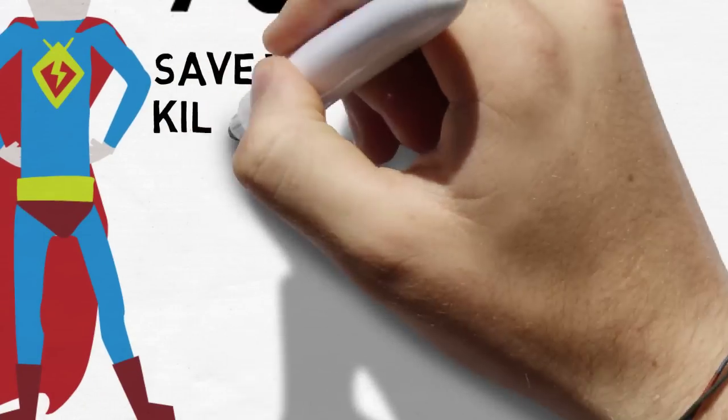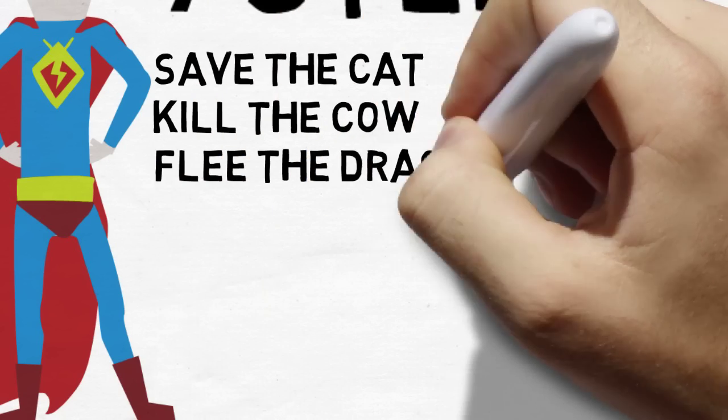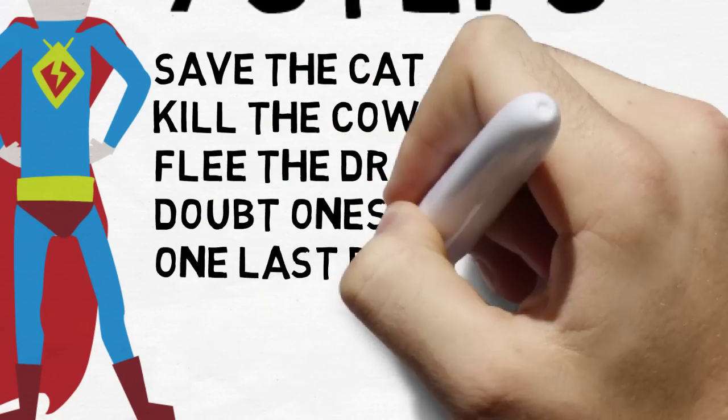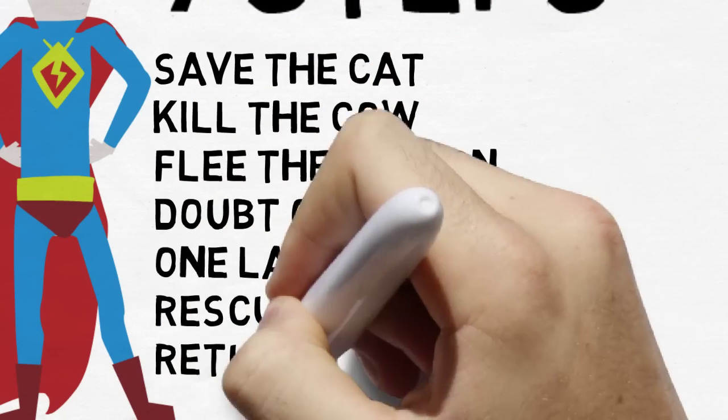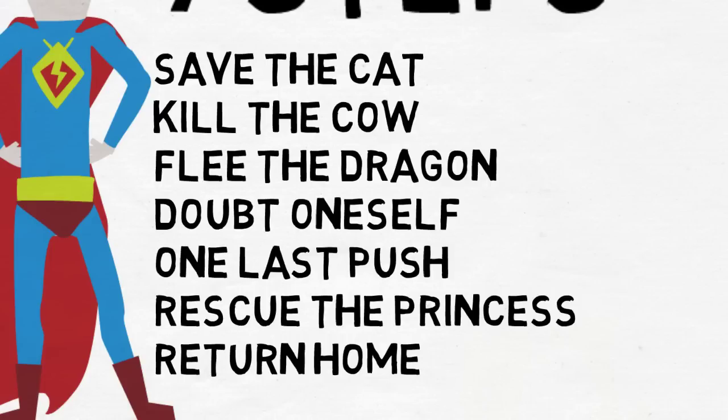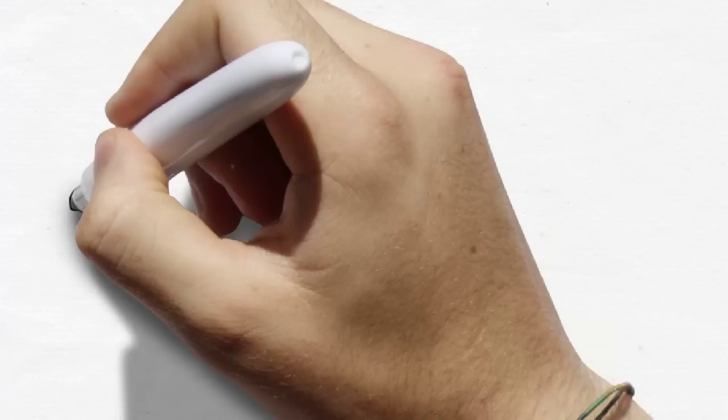Save the cat. Kill the cow. Flee the dragon. Doubt oneself. One last push. Rescue the princess. A return home. So let's look at those seven elements.